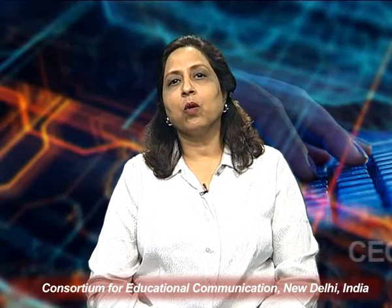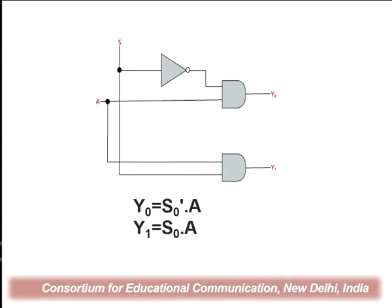The same expression is represented in the form of the block diagram. S and A go as inputs to Y0: S in the complemented form and A in the direct form. For Y1, we see both S and A going in the direct form.